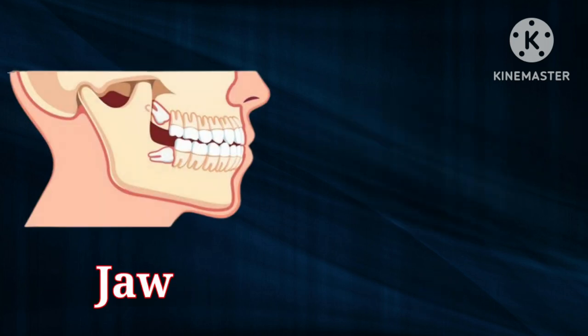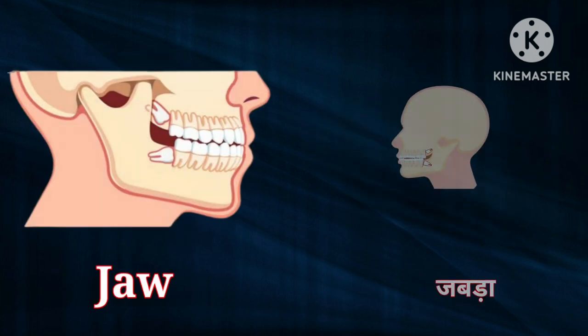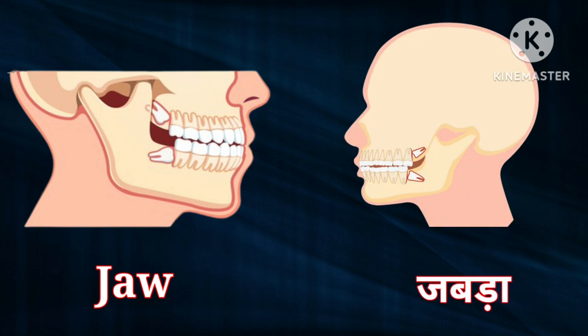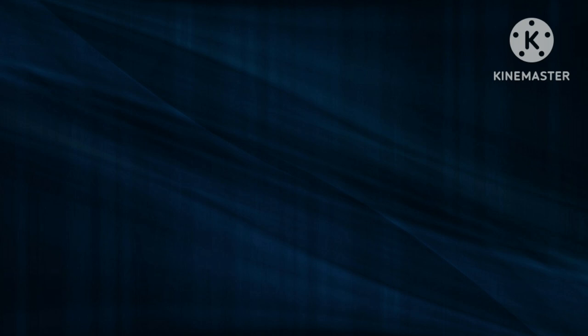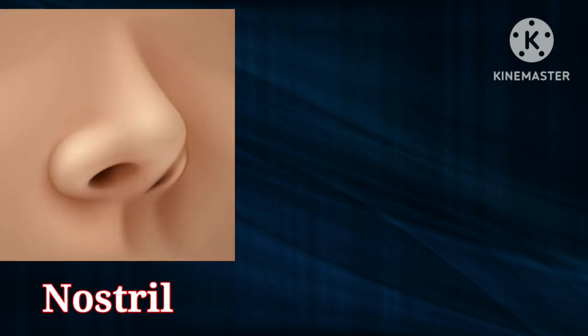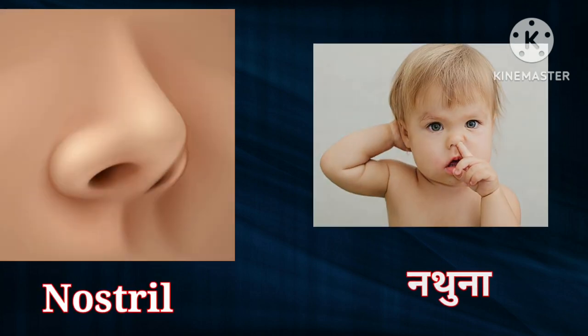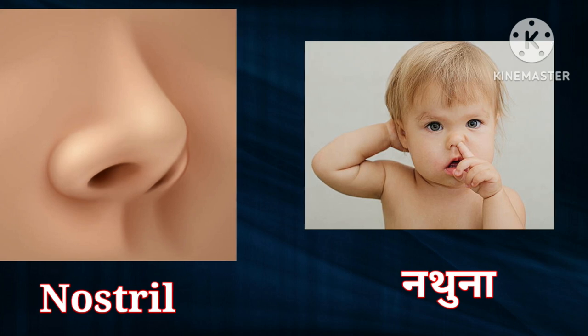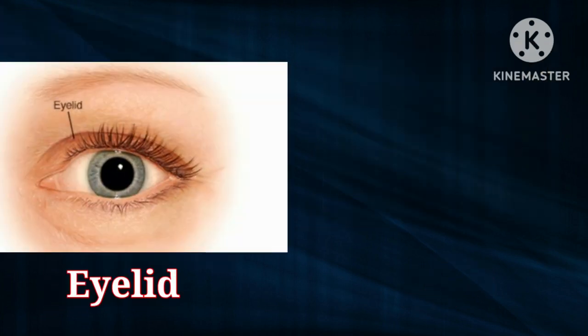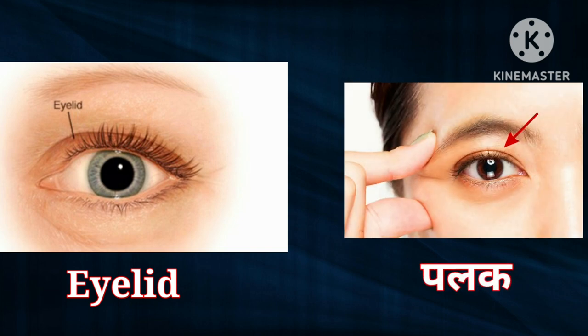Jaw means jabda. It's called jaw. Nostril means natuna. It's called nostril. Eyelid means palag. It's called eyelid.